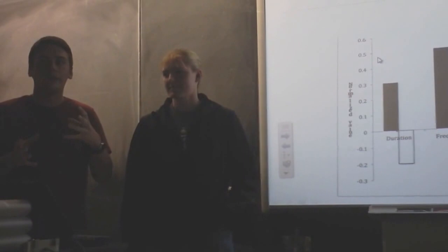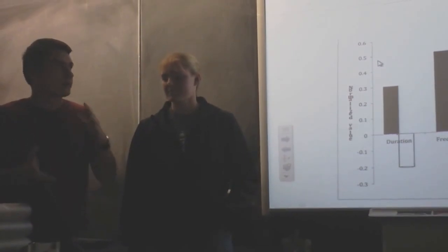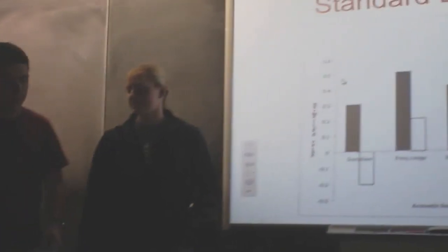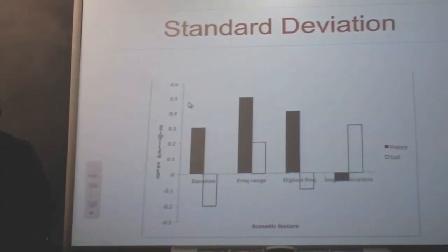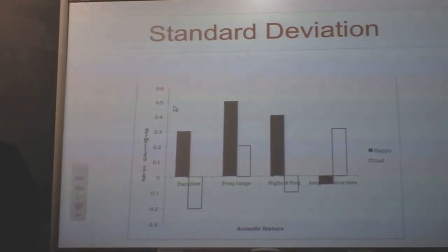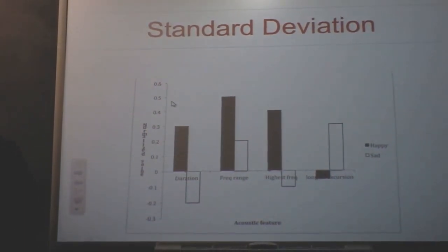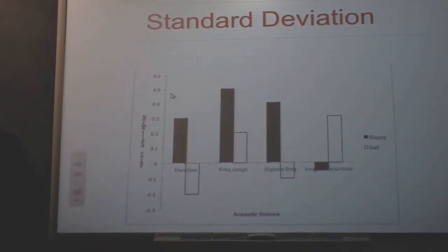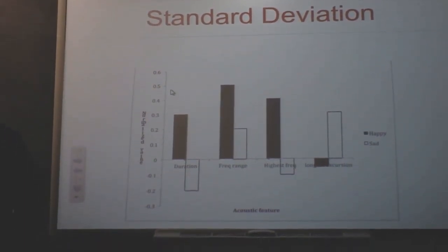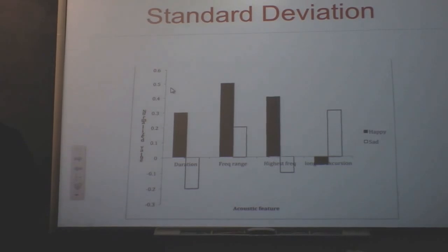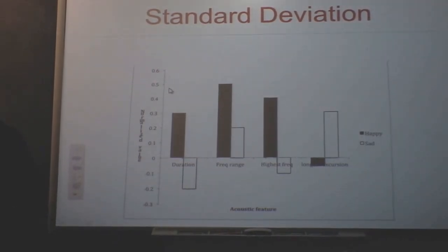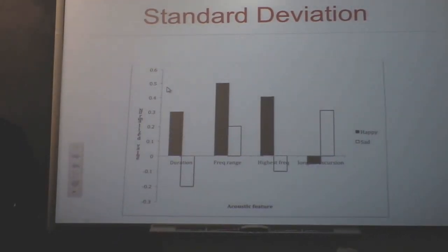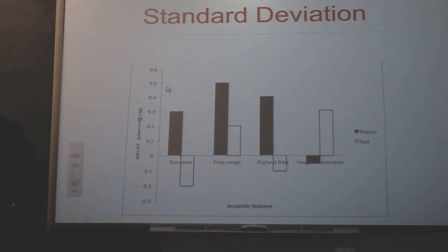This just lets us adjust the range and the variables so we can compare them all together. Using this, we found that the happy versions of the songs had a longer duration, a higher frequency range, a higher highest frequency, but a shorter longest excursion.